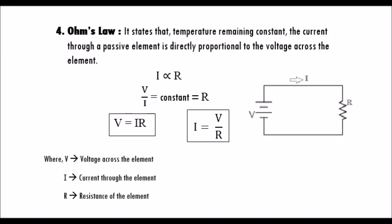Ohm's law states that, temperature remaining constant, the current through a passive element is directly proportional to the voltage across the element. V over I equals constant, which is R. Therefore, V equals I into R, or I equals V over R, where V is the voltage across the element, I is the current through the element, and R is the resistance of the element.